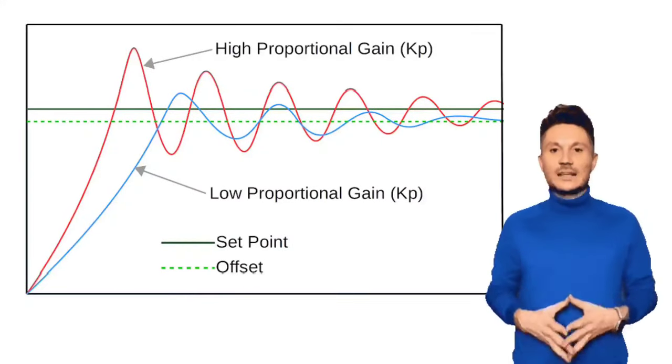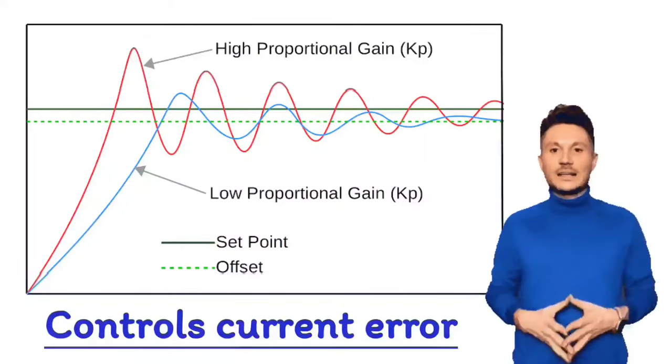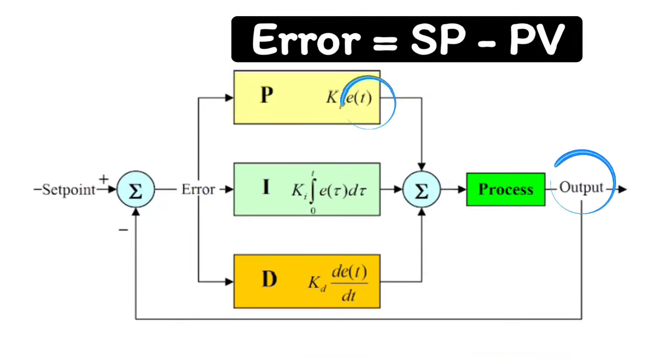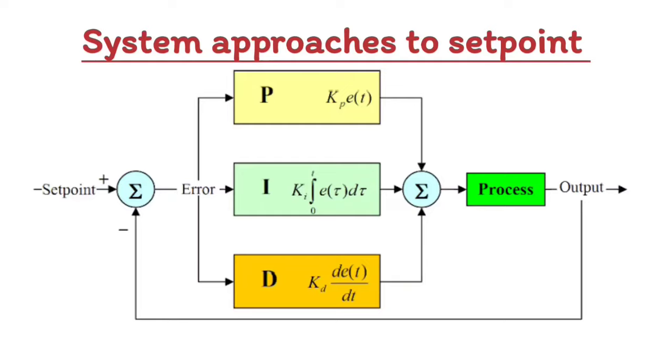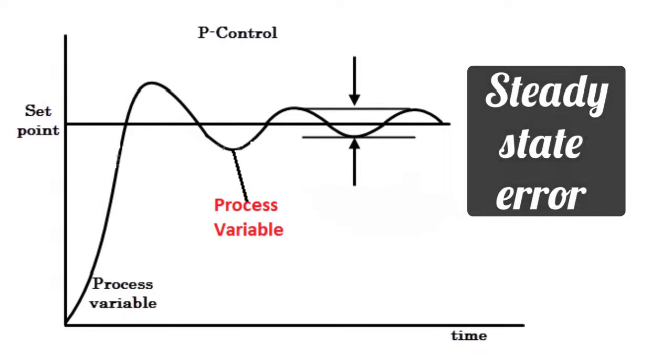For P action, we use a proportional gain that controls current or present error. As the error increases, the output also increases. By doing so, it moves the system closer to the set point. A steady state error remains in the P action.